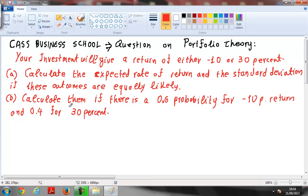The next question is a question from Cass Business School on some part of portfolio theory. Actually we have investments in a portfolio and my investment will give a return of either minus 10 or 30%. I have to calculate the expected rate of return and the standard deviation if these outcomes are equally likely.